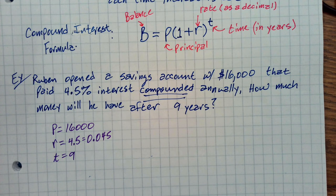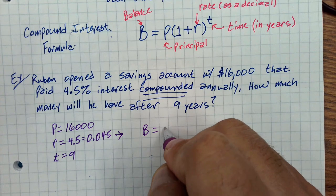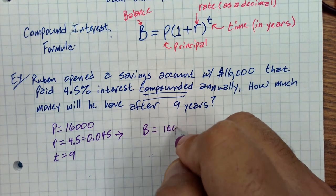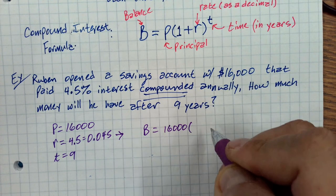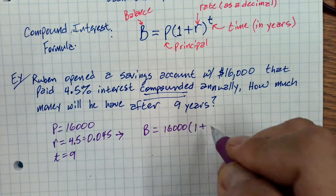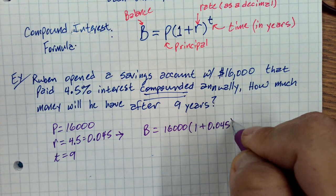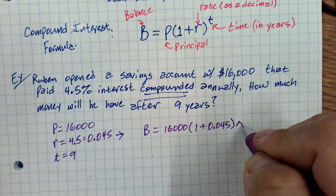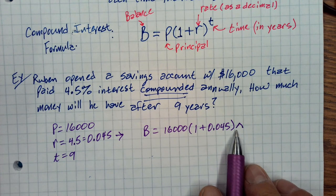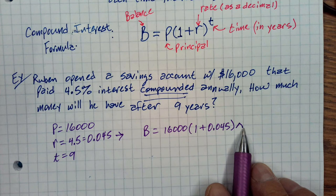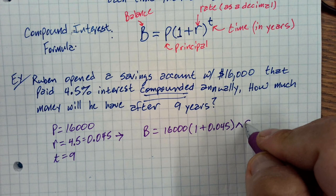Let's go ahead and plug it all in. So the balance equals the principal, which is 16,000, parentheses, 1 plus 0.045. I'm going to use the carat because this is how we're going to enter it into our calculator. It raises to a power. And what's it going to raise to? Nine.